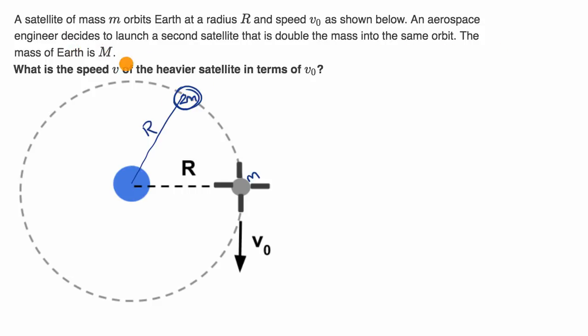The mass of Earth is capital M, so this is Earth right here. What is the speed, lowercase v, of the heavier satellite in terms of v-naught? Speed is the magnitude of velocity, so it's lowercase v without a vector symbol. What is lowercase v going to be equal to? Pause this video and see if you can figure it out on your own.